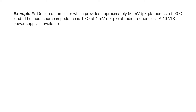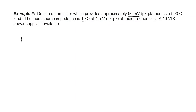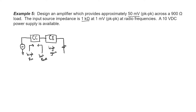Now we're supposed to design an amplifier that gives us 50 millivolts across a 900 ohm load, starting from a 1 millivolt peak-to-peak source at 1 kilohm source impedance. We're going to have to use a two-stage amplifier. My strategy: start with a common collector amplifier, which gives a high input impedance and a small output impedance, making it perfect for driving a common emitter amplifier that can give me high gain. We start with the source and source impedance, an input coupling capacitor, followed by our common collector stage.